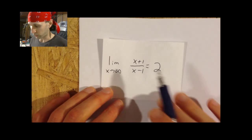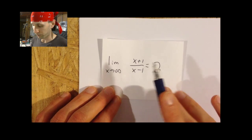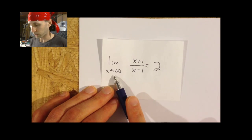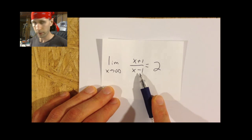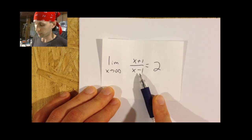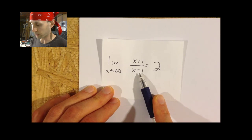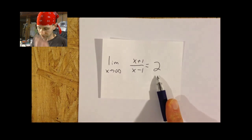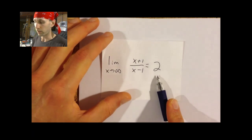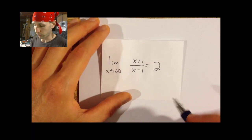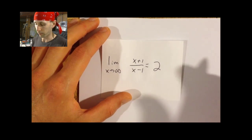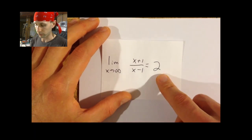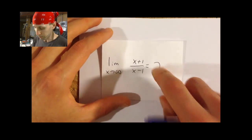So I'm going to set out to show that the limit as x approaches infinity of this function — which I think was the same function I did in the last video — is not one, but actually two. And clearly this is not true, but I'm going to attempt to show that it is true, and I'll show you how it fails.